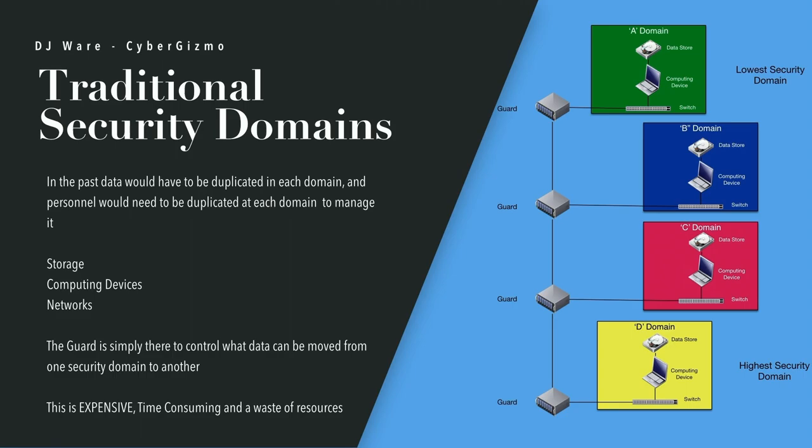In order to set up those traditional security domains — and IBM did this too — they had to replicate all of the things needed for each of the domains. They had to replicate switches, firewalls, and something that would move data between them. It's a complicated thing — it means you have to move storage, computing devices, and networks; you have to duplicate all those things. They had a sort of primitive guard, but the only thing it did was help move data from one security domain to another. It was expensive, time consuming, and a waste of resources because most of those resources sat idle.